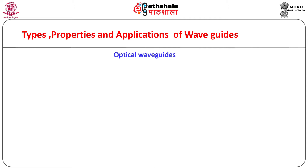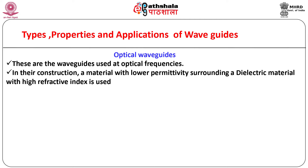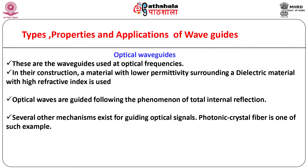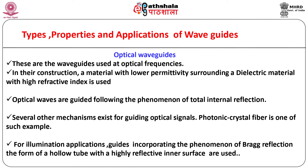We are familiar with many devices using optical fibers as optical waveguides. These are waveguides used at optical frequencies. In their construction, a metal with lower permittivity surrounding a dielectric material with high refractive index is used. Optical waves are guided following the phenomenon of total internal reflection. Photonic crystal fiber is one such example. For illumination applications, guides incorporating Bragg reflection in the form of a hollow tube with a highly reflective inner surface are used, where inner surfaces may be polished metal or covered with a multi-layer film.